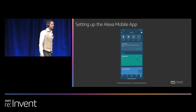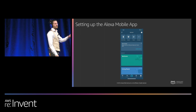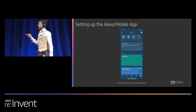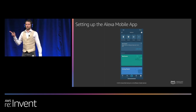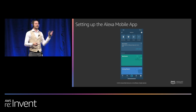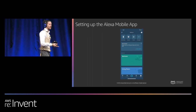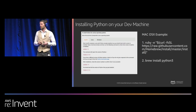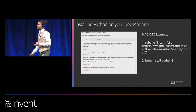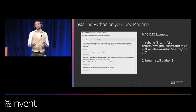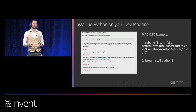Next is setting up the Alexa mobile app — whether you have Android or iOS, download the Alexa mobile app and log in with your Amazon developer account. Inside the app is where we start registering our development boards using Wi-Fi Simple Setup. The next piece of setting up the development environment is installing Python — whether you're on Linux, Windows, or Mac, we support all three platforms.